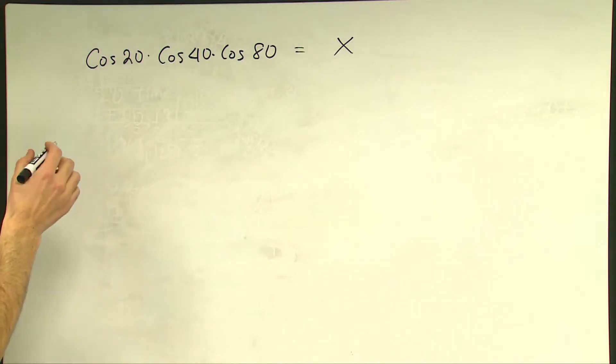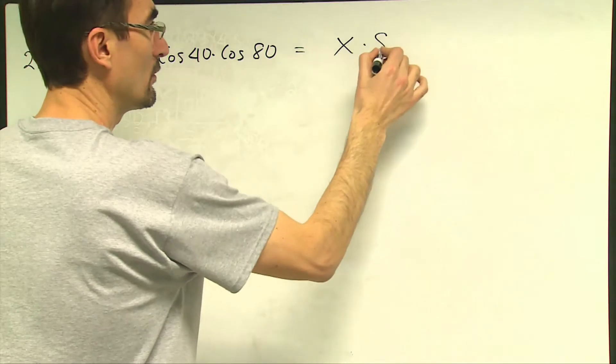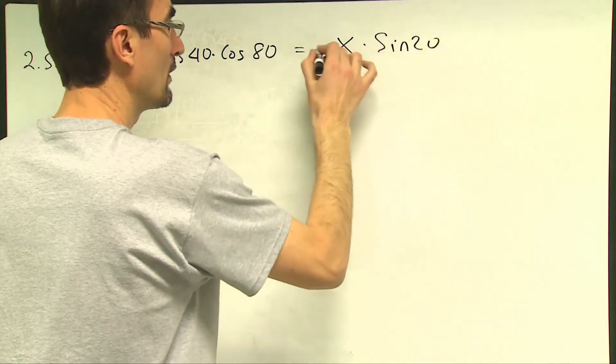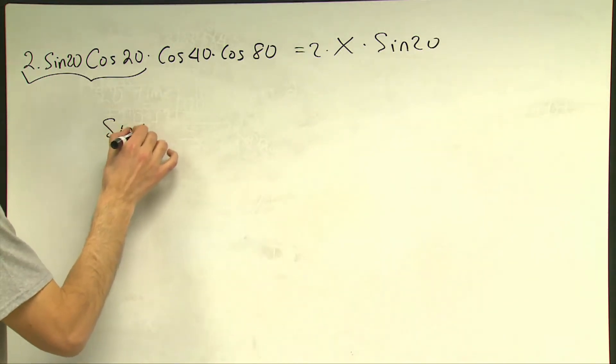So if I multiply both sides by 2 times sine 20, I will end up with 2 times sine 20 times cosine 20 which should remind me the half angle formula for sine which will be equal to sine 40.